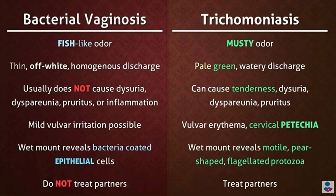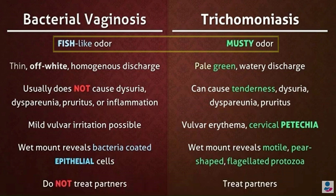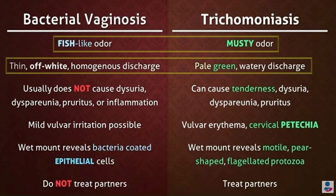Comparing bacterial vaginosis and trichomoniasis: there is a fish-like odor in bacterial vaginosis and a musty odor in trichomoniasis. In bacterial vaginosis there is thin off-white homogeneous discharge, whereas there is pale green watery discharge in trichomoniasis.